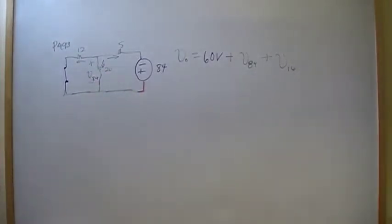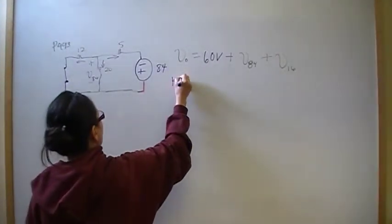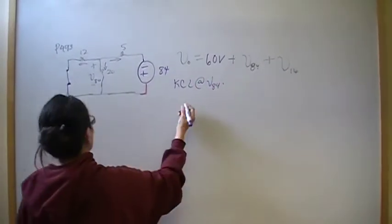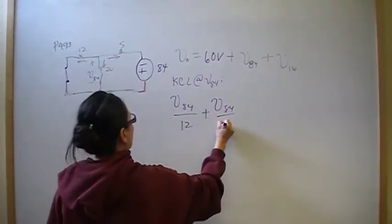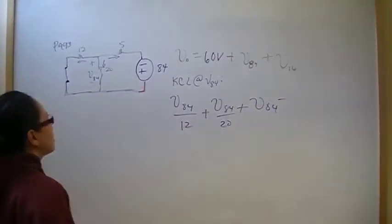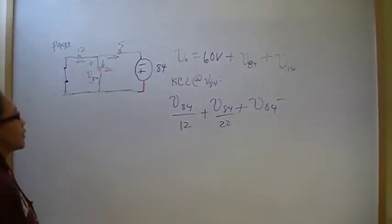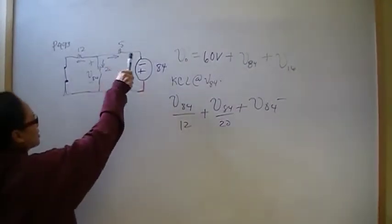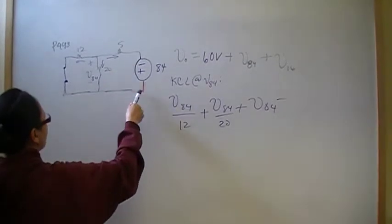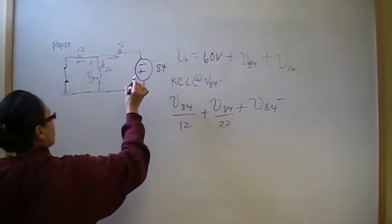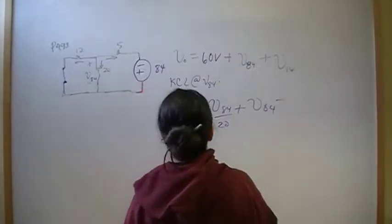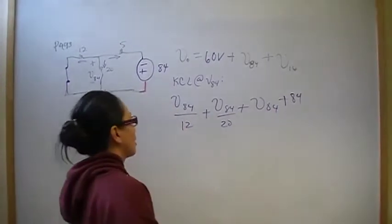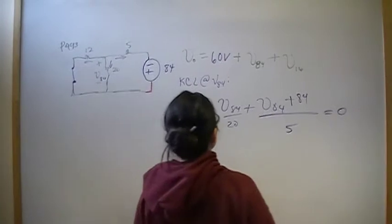And again, I'm going to use KCL to find V84. So KCL at V84 gives me V84 over 12 plus V84 over 20 plus V84 minus. Now, here, it could get a little bit confusing. Is this a minus or is it a plus? Just realize that we're summing away positive current, and the positive current is going through some kind of voltage. And the voltage it's going through is going from a minus to a plus. So that means it went from a negative to a positive, so it increased. So that means you went through a voltage rise, so you should have a plus. So plus 84. And that's going to be over 5. All that should sum up to 0.